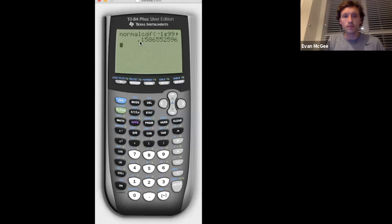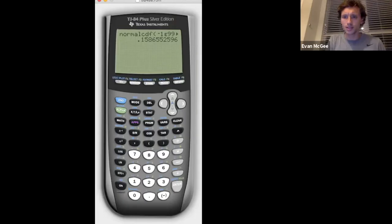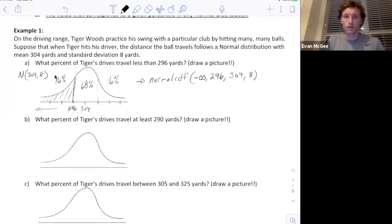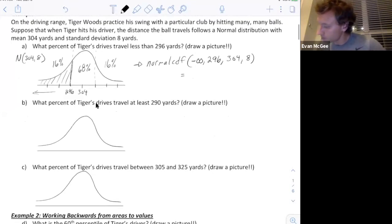It'll calculate 15.87%. So 15.87, you'll notice that it's not perfectly 16%. We calculated it to be 16% because the 68, 95, 99.7 rule is an approximation, but using the calculator gave us 15.87%, which is more accurate.